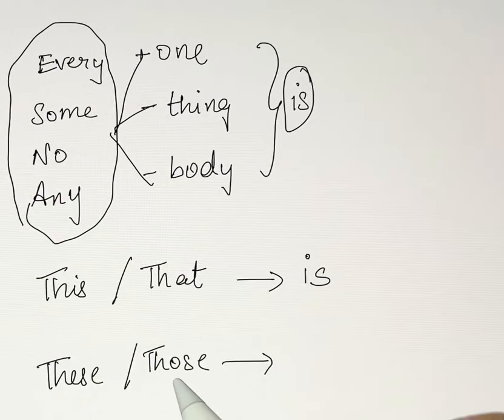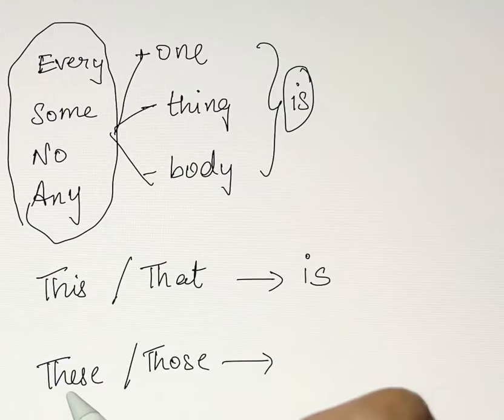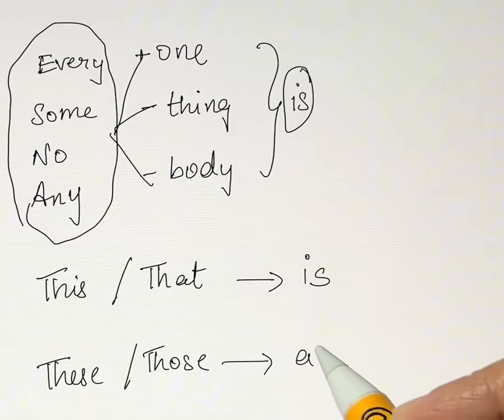These or those are plural subjects. That means you're talking about more than one. Here you're only talking about one quantity. Here more than one. So we use the plural verb, that is are.